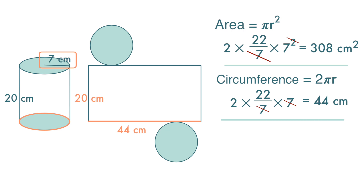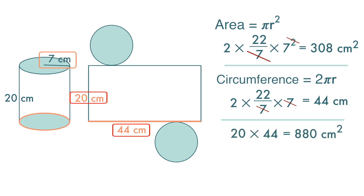So, the area of the rectangle is 20 times 44, which is 880 cm².